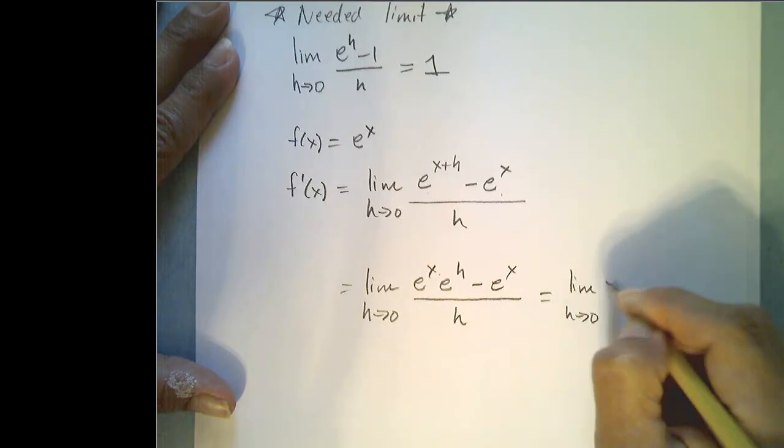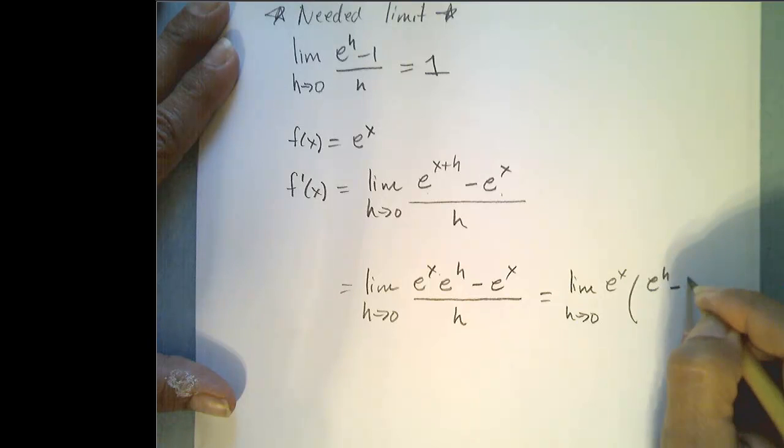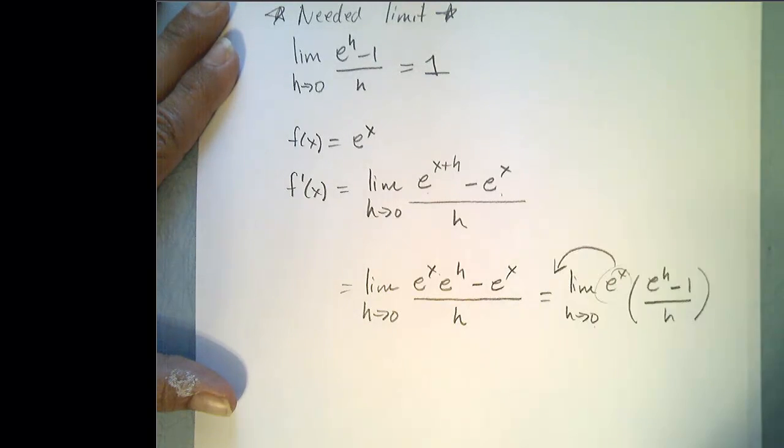Limit h to 0, e to the x. I leave behind an e to the h minus 1 all over h. And again, since x is not dependent on h, I can move it in front of the limit.